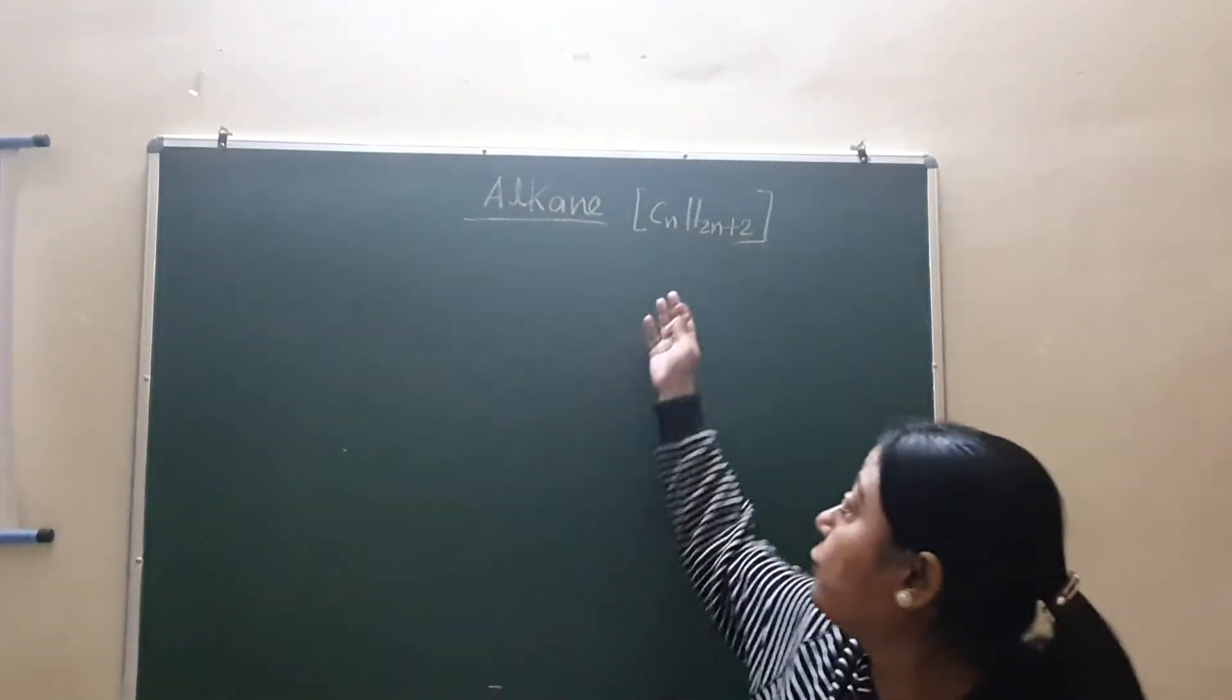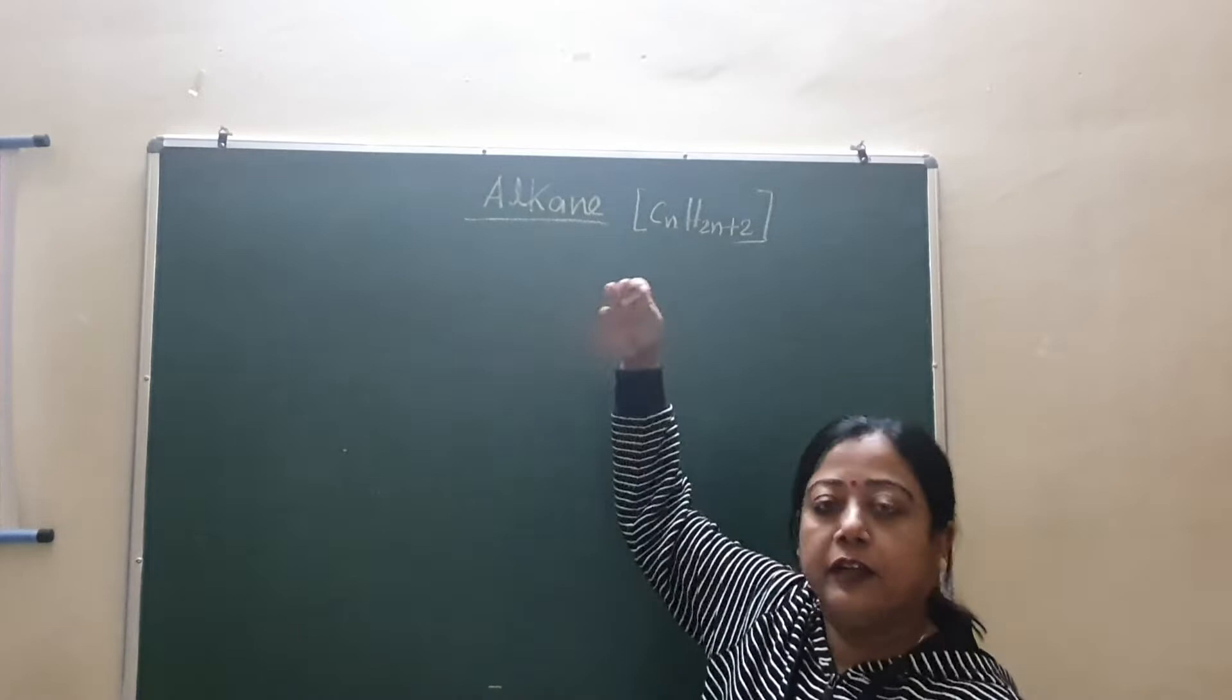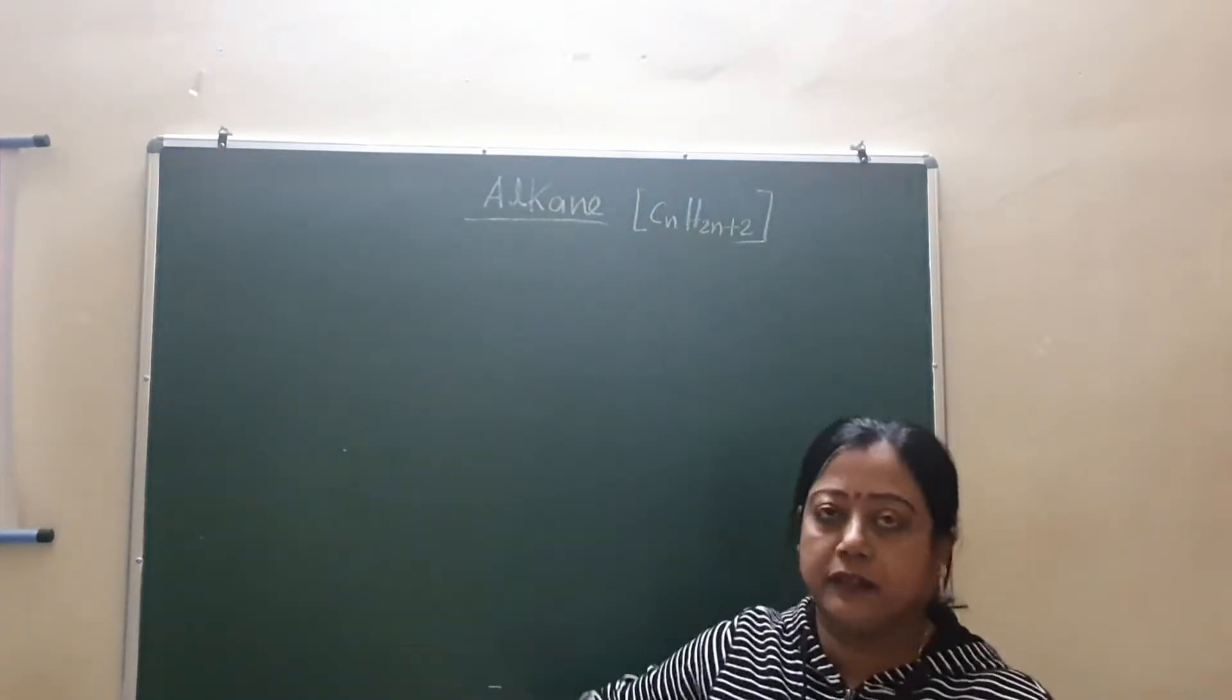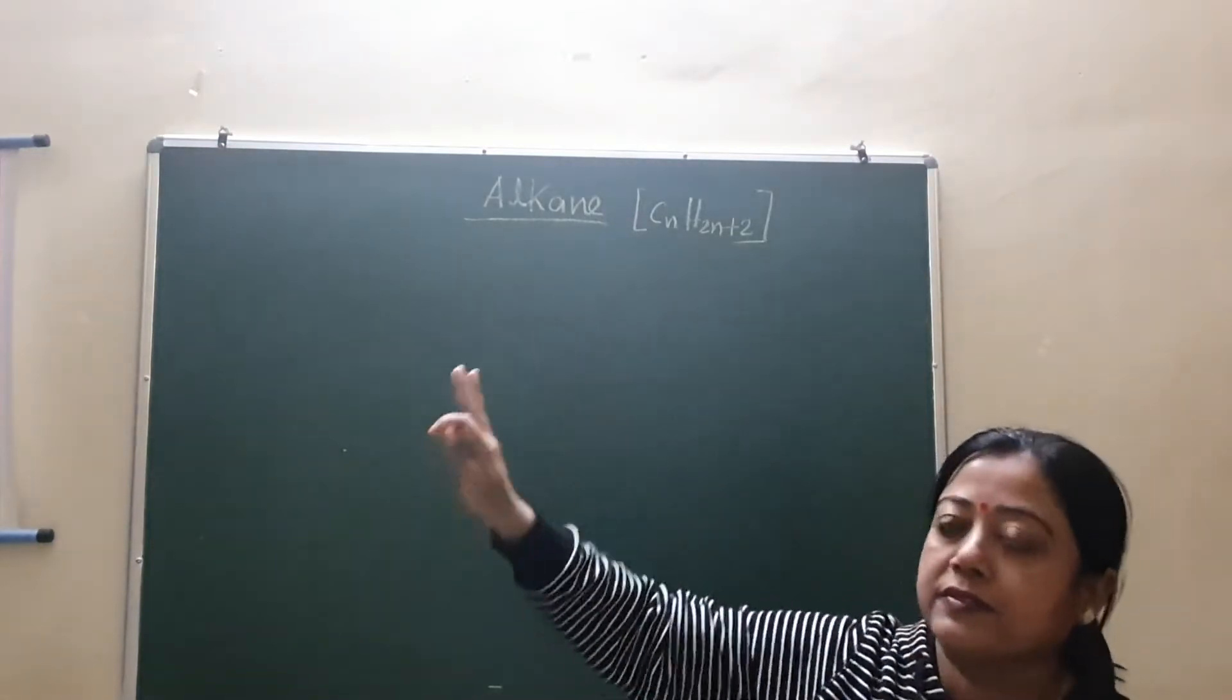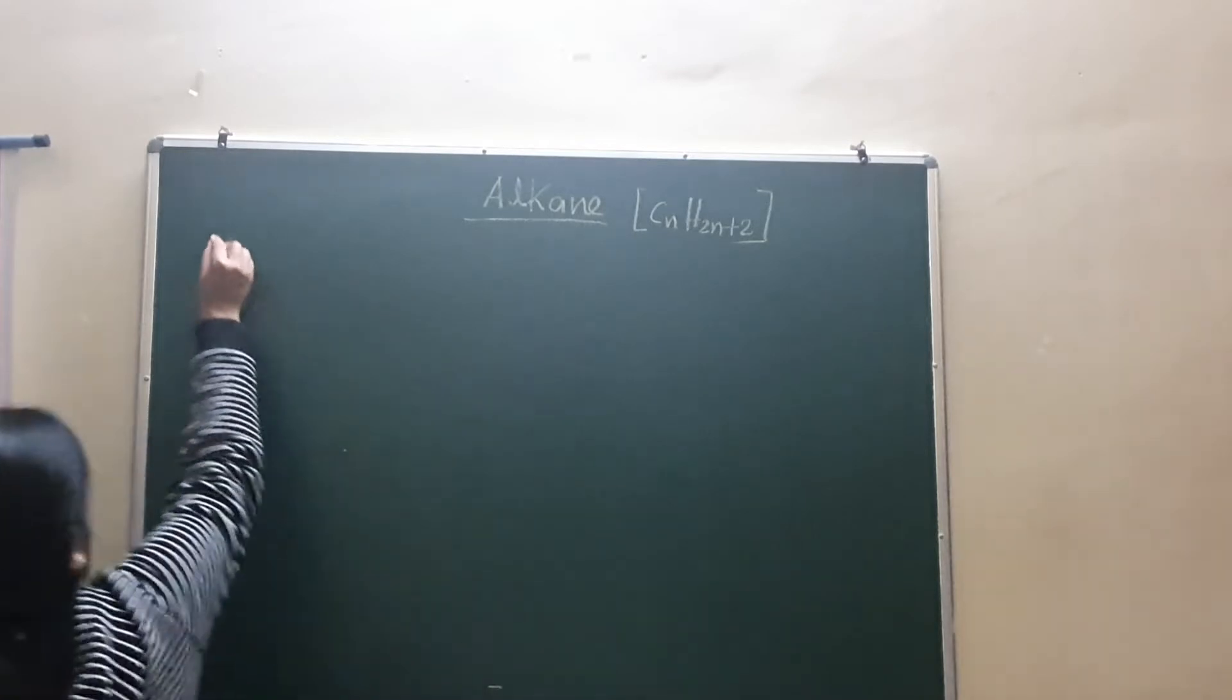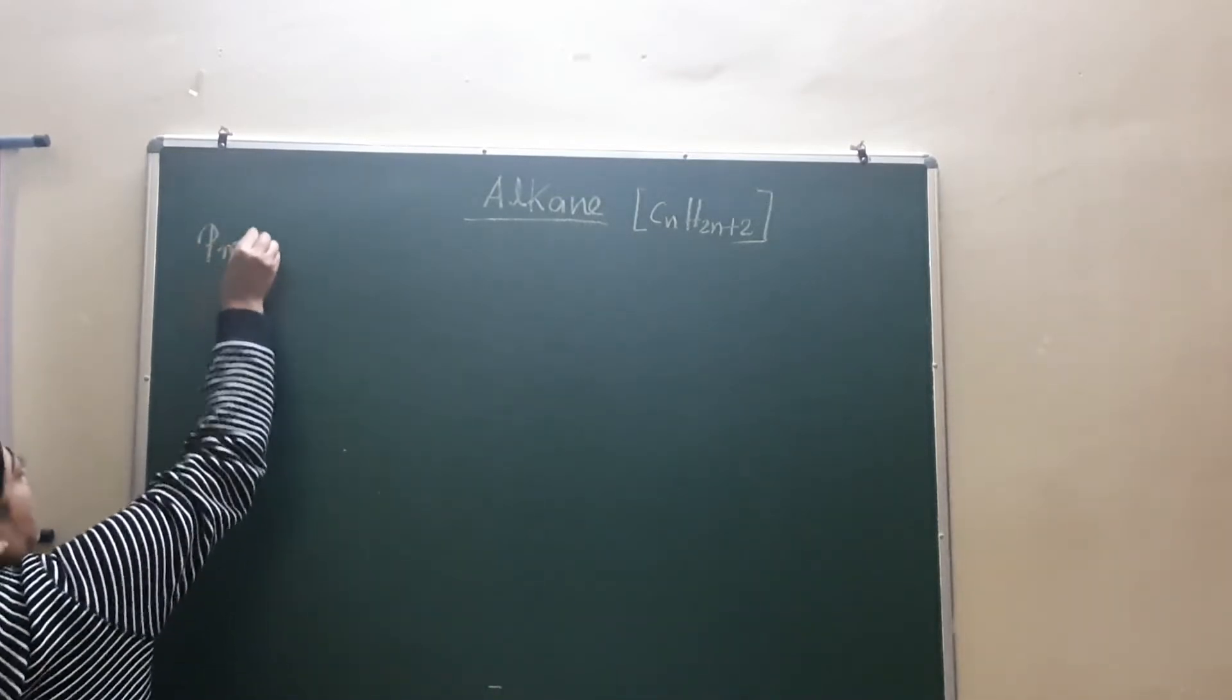Whatever it is, the saturated hydrocarbon inherently known as the alkane or paraffin having the general formula CnH2n plus 2. You know N equal to 1, CH4 methane, N equal to 2, C2H6 ethane, like this. Today mainly we will discuss about the preparation of the different alkanes.